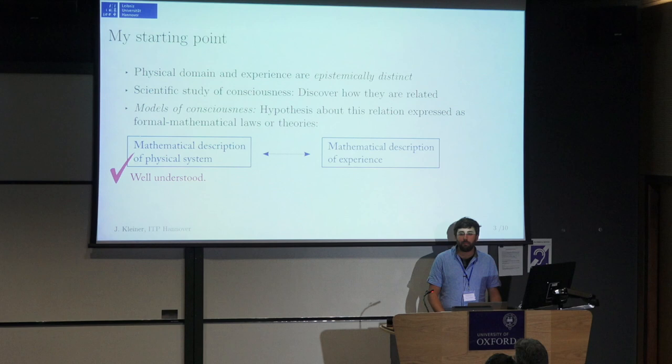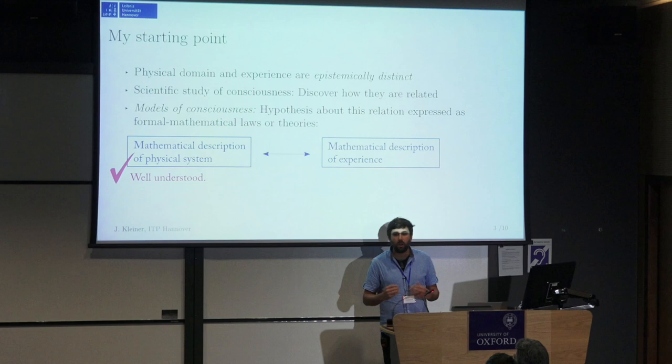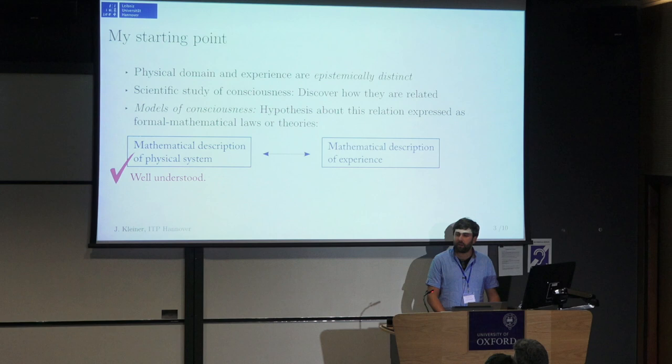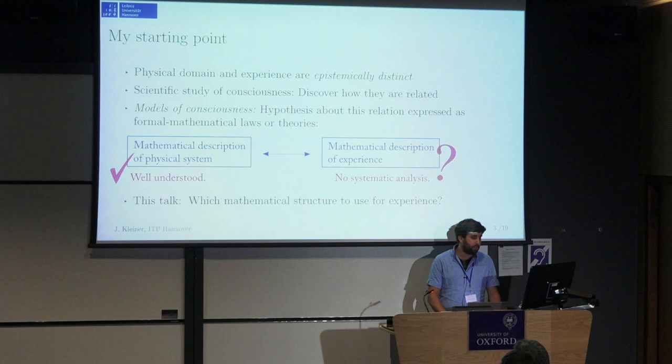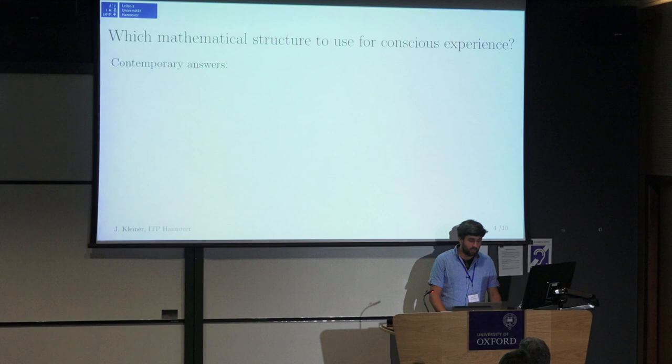Most of us would agree that the mathematical description of experience is well-defined, or at least well-understood. We know how to model various levels of the brain, or maybe we know a good deal about the fundamental physical theory. I would claim the same is not true about the mathematical description of experience. There is, at least to date, no systematic analysis of which mathematical space or structure one is supposed to use for this epistemically separated domain when building models of consciousness. The purpose of my talk is to discuss what this could be.